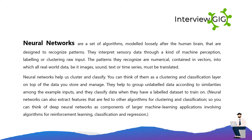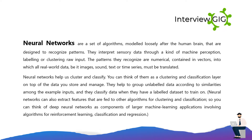Neural networks are a set of algorithms, modeled loosely after the human brain, that are designed to recognize patterns. They interpret sensory data through a kind of machine perception, labeling or clustering raw input. The patterns they recognize are numerical, contained in vectors, into which all real-world data — be it images, sound, text or time series — must be translated.